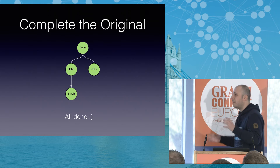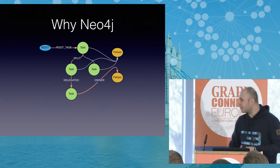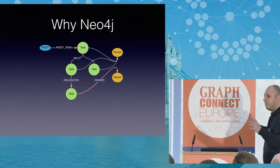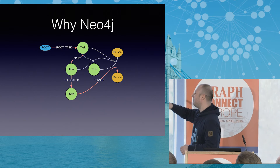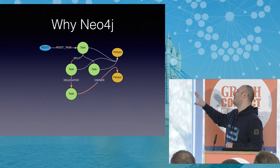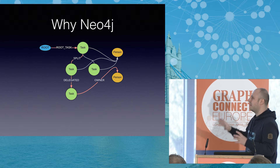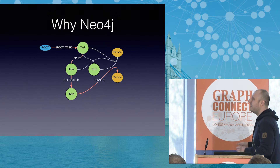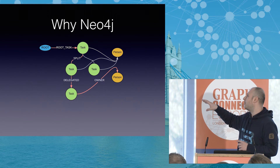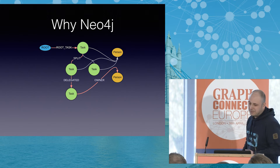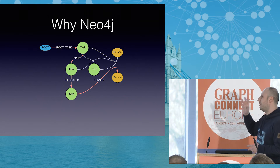Now we come to the point where we ask ourselves: why is Neo4j good for this? We came from a whiteboard diagram to this — a picture from the Neo4j database. Some connections are removed, but this is how the task looks in the database. We added some relevant nodes: we isolated the persons into their own nodes and we have a root element just for querying purposes. Something like this in a relational database is a problem, but here it works naturally.